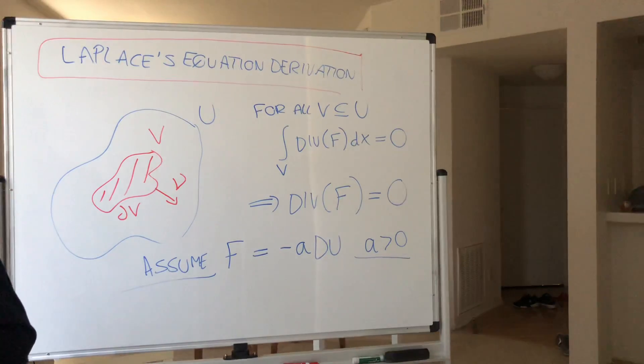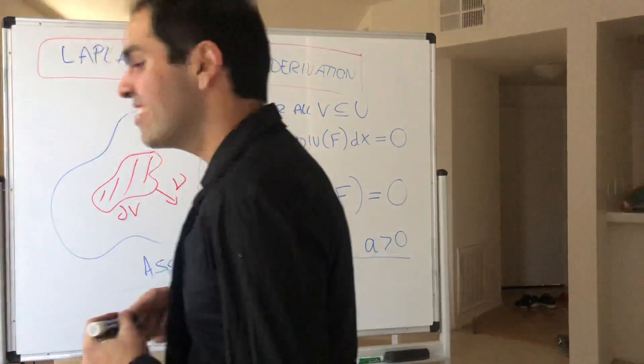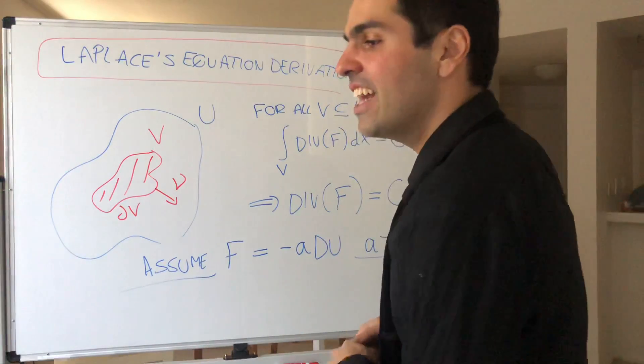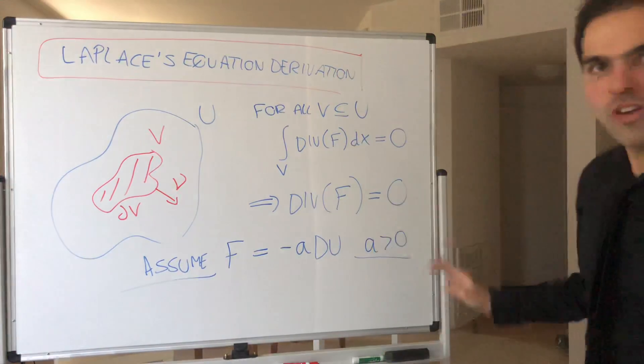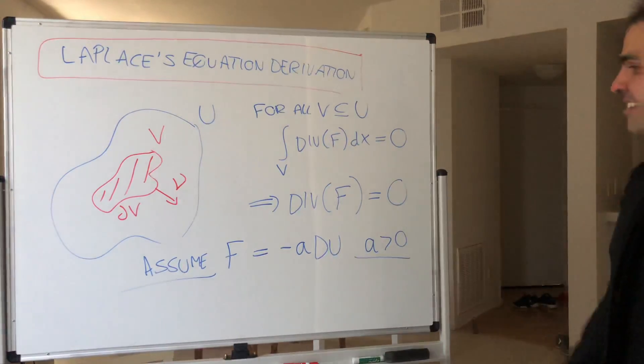in chemistry, that's called Fick's law of diffusion. In temperature, that's called Fourier's law of heat conduction. In electricity, that's called Ohm's law of electrical conduction. Again, words, I have no idea what they mean, but in math, this makes sense.